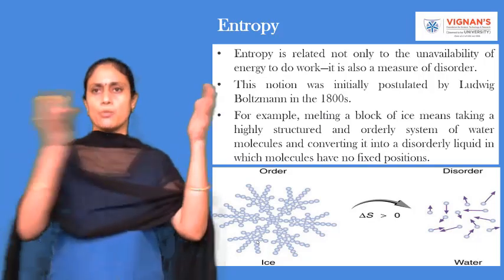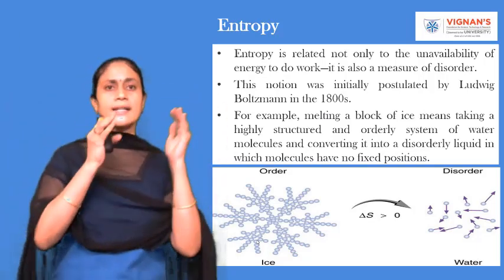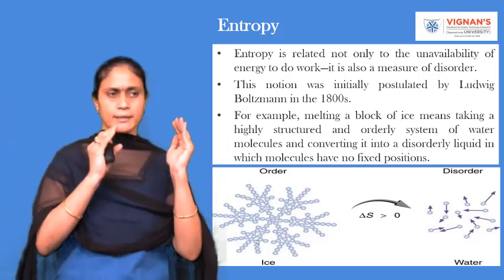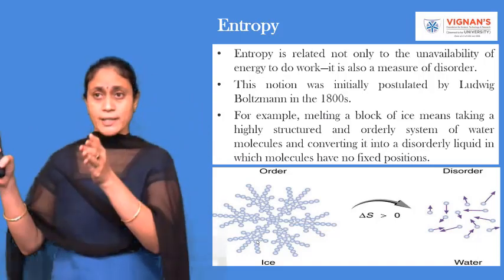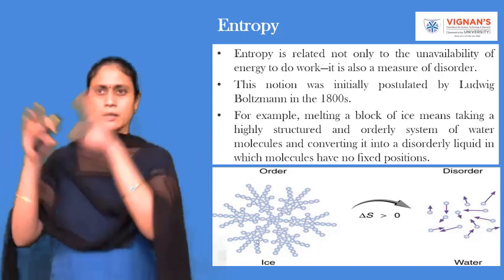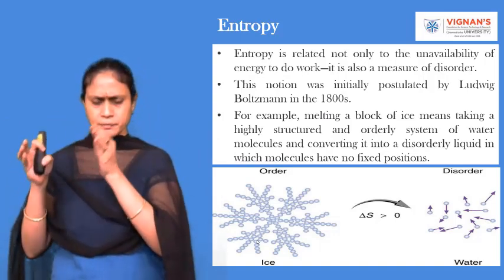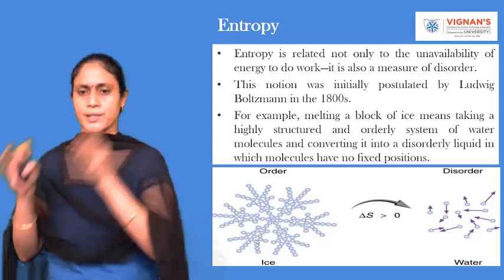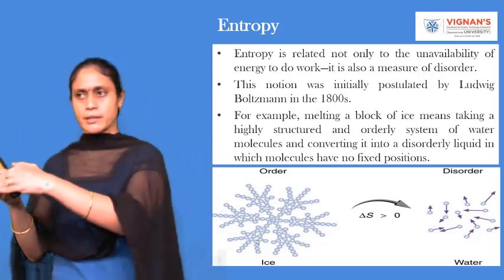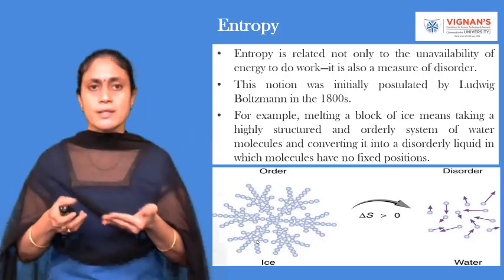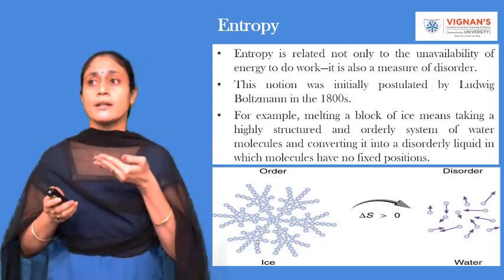Just consider water and ice. Water is an unstable state — that means the molecules are freely available. Ice is a solid state of water; it has a proper structure and is an ordered structure. When we are moving from orderedness to disorderedness, the entropy of the system will be increasing — it will be greater than zero.